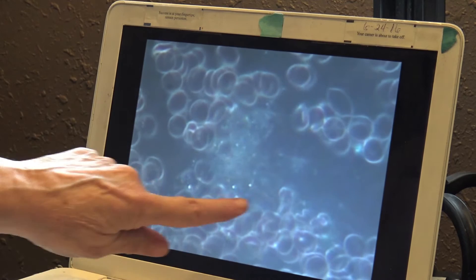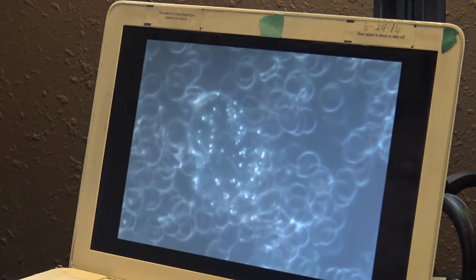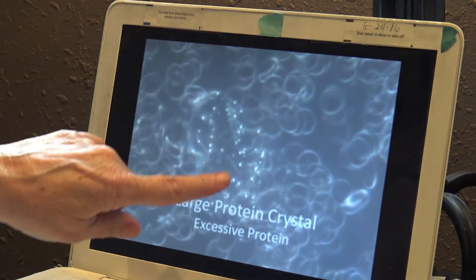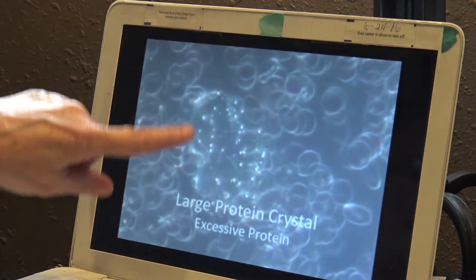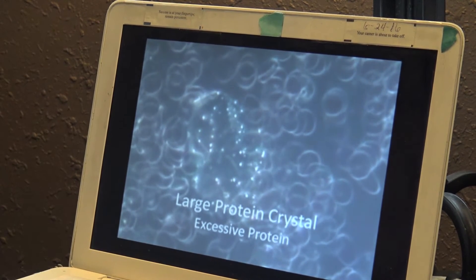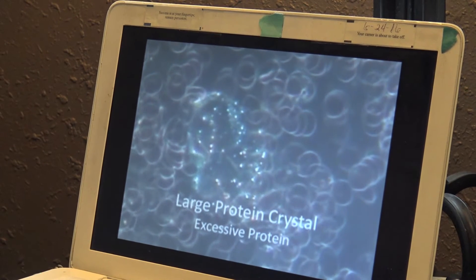So this particular person has, this is just one of many we found in the bloodstream that were really severe. And this is a large protein crystal with all those white dots. That's a large protein crystal. And if you have too much or excessive protein in your bloodstream, it can contribute to heart disease, clogged arteries, high blood pressure, high cholesterol.